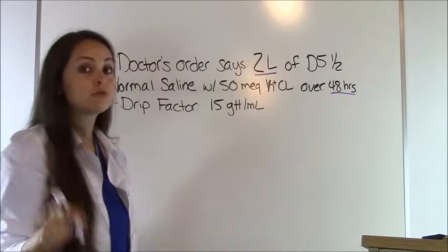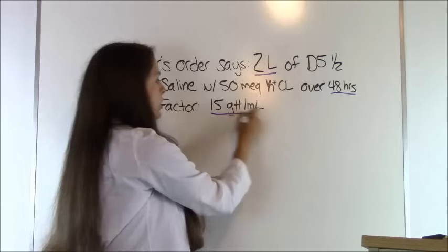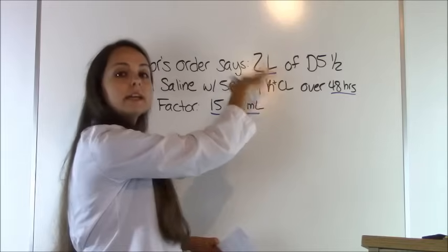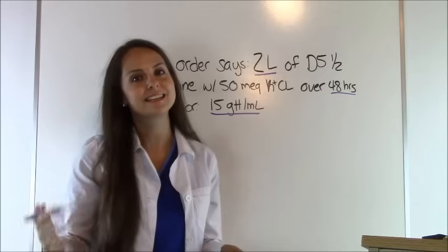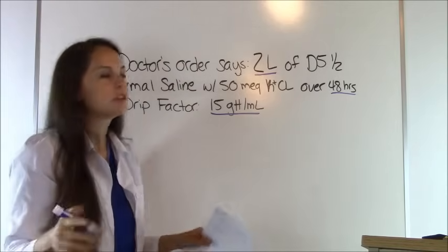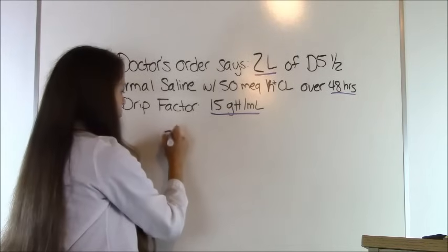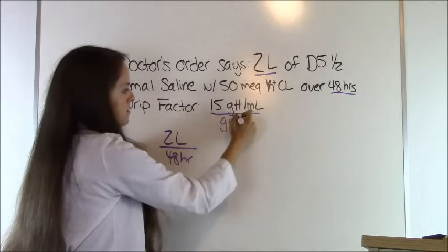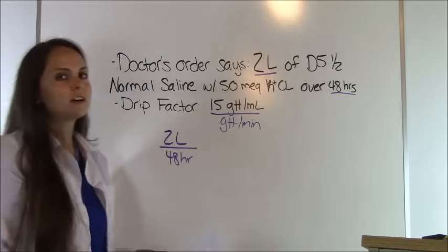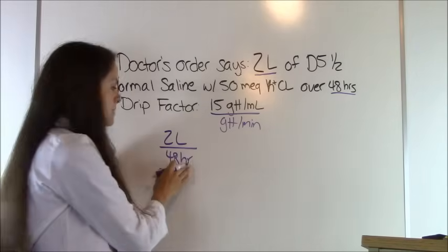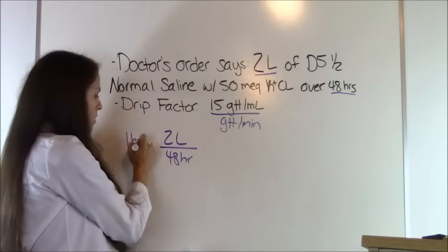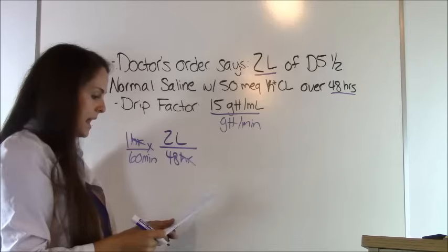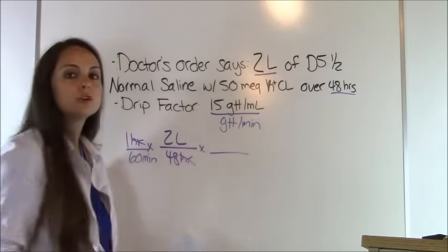We have a drip factor of 15 drops per milliliter. We can already see we need to convert liters to milliliters and hours to minutes. Starting with the doctor's order: 2 liters over 48 hours, trying to get to drops per minute. First, convert hours to minutes: 1 hour equals 60 minutes, canceling out hours. Now let's convert liters to milliliters.